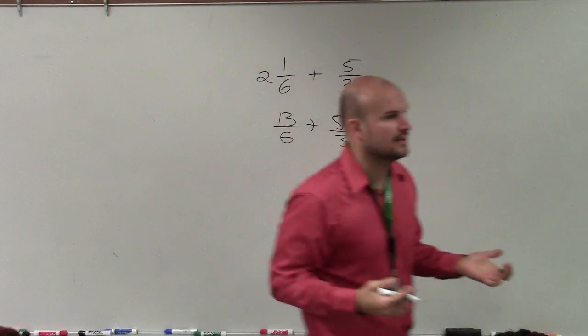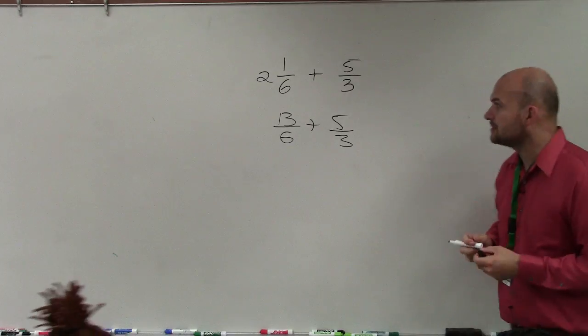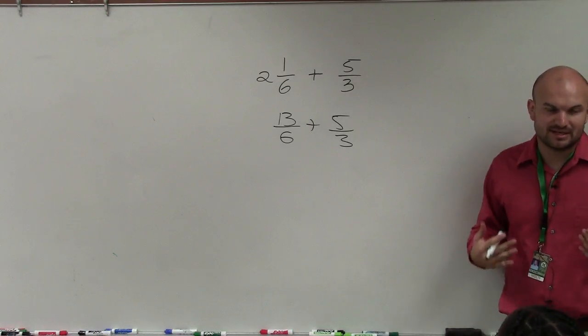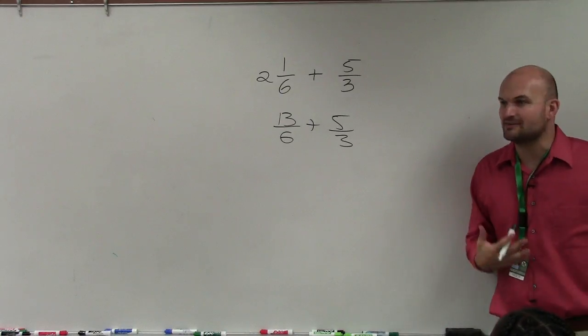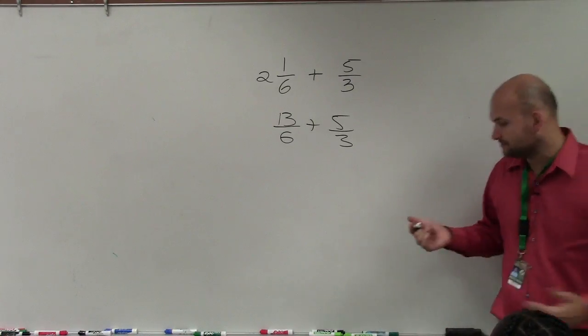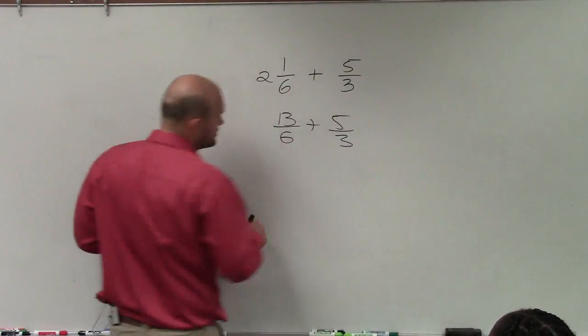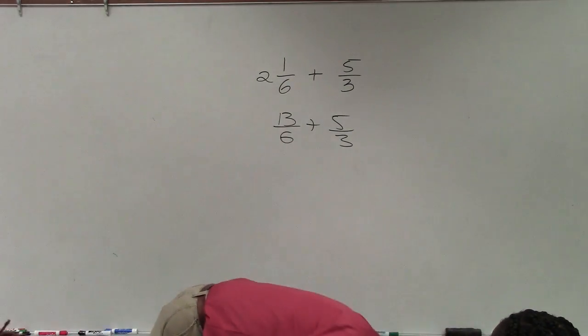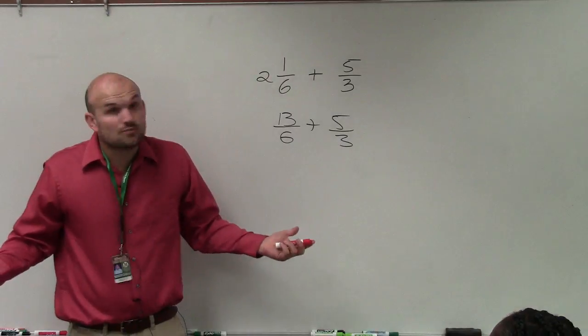Does everybody follow how I went through that? Going through a little bit quicker. Now, this is kind of getting to my point where students can make the problem more difficult on themselves. So some students would say, all right, common denominator, 6 times 3. What's wrong with me? 6 times 3 is 18. Yes, that does work, right?